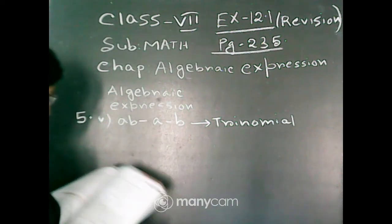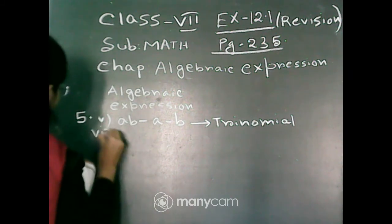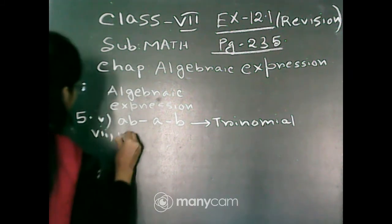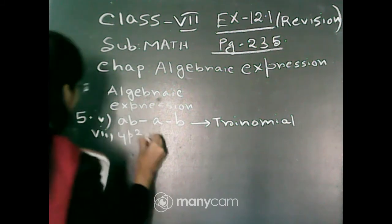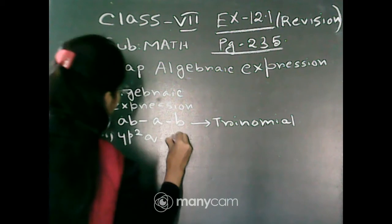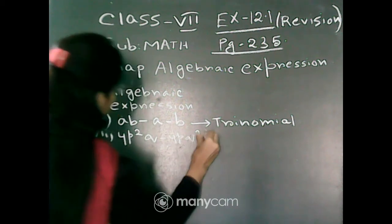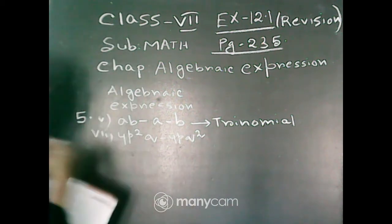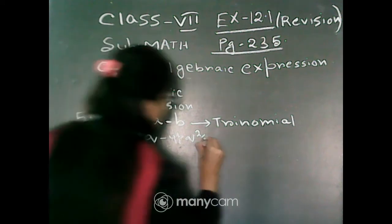Next, question number 7. The expression is 4p square q minus 4pq square. This algebraic expression contains 2 terms: 4p square q and minus 4pq square. So it is a binomial.